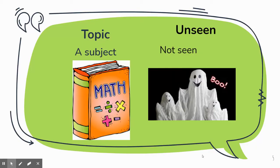Topic is a subject. If somebody asks what topic you're studying, you could say math, reading, science, or social studies. Unseen means not seen. The only thing I could think of was a ghost—you can't see them, so they are unseen.